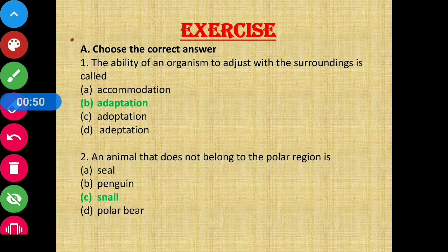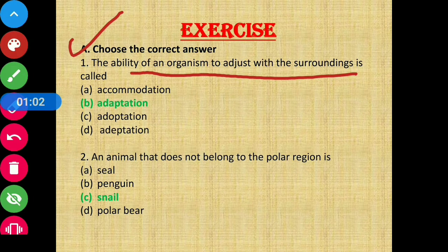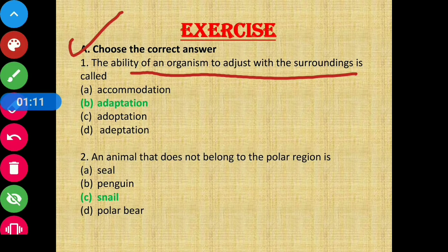Section A: Choose the correct answer. Question 1 says: the ability of an organism to adjust with its surroundings is called — the ability with which an organism can adjust with its surrounding, that process or ability is called adaptation. Option B is the correct answer.